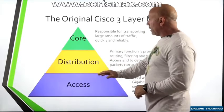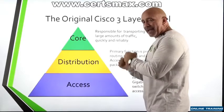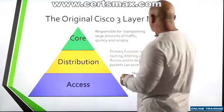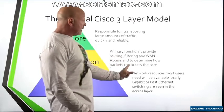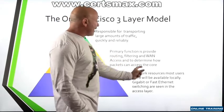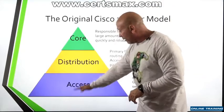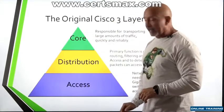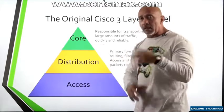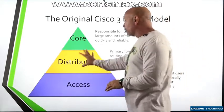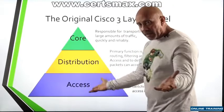The distribution layer was the workhorse — this layer was really doing all the work. Its primary function is to provide routing, filtering, and WAN access to determine how packets can access the core — meaning, how do I get information from down here all the way up there? That was its job, handling all the access lists and everything. Then the access layer — that's the desktop layer.